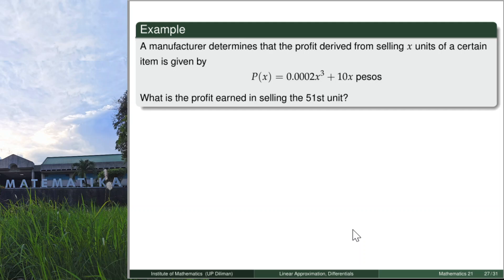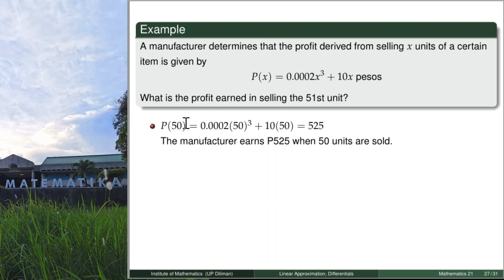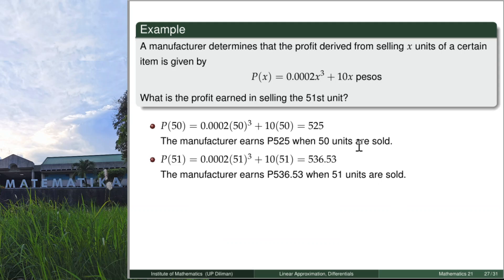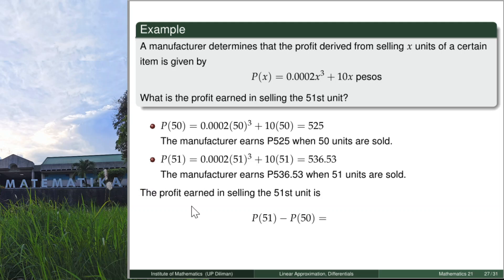Here's an example: a manufacturer determines that the profit from selling x units of a certain item is given by this profit function. The question: what is the profit earned in selling the 51st unit? P(50) means the manufacturer earns 525 pesos when 50 units are sold, and P(51) is the earnings for 51 units. So the profit earned in selling the 51st unit is P(51) − P(50) = 11.53 pesos.